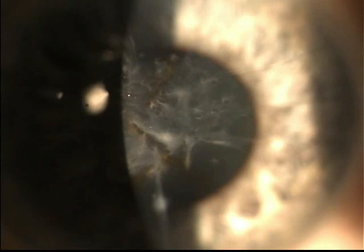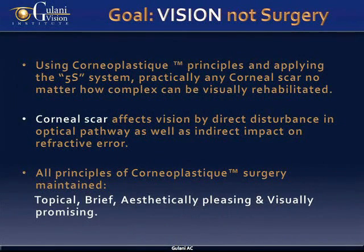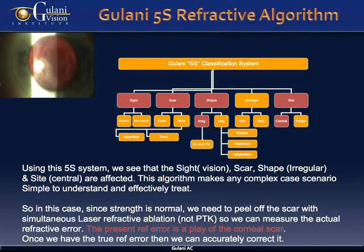Anterior corneal scars affect vision directly by blocking the optical pathway and indirectly by altering the shape and hence the refractive status. Using corneoplastic principles, we can use these very factors and reverse them to our advantage. In the 5S algorithm, you can see the impact of the corneal scar on vision and determine the patterned approach of corneal rehabilitation.